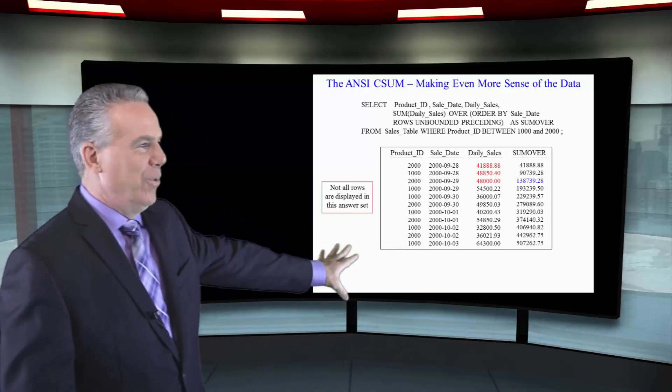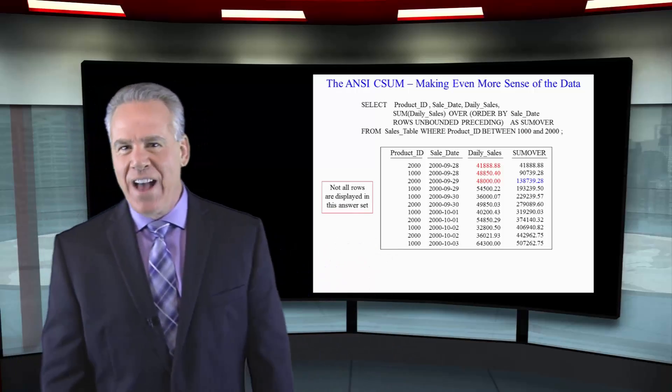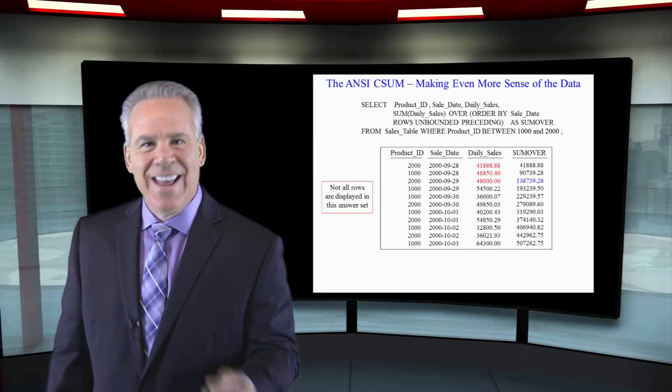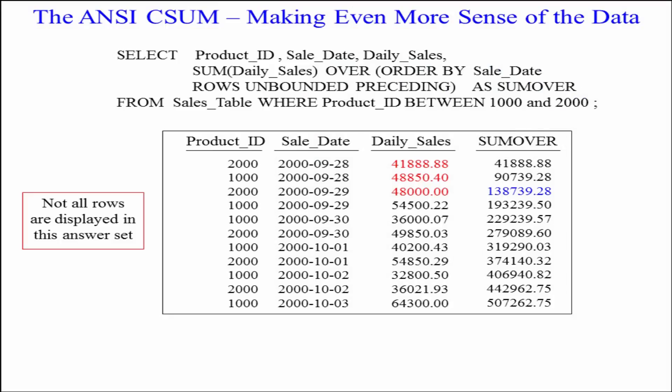Check out the blue in the answer set: 138,739. We're making some money now. How was it calculated? After the sort by sale date, the rows were calculated as 41,888, then 48,850, then 48,000 — and that totals 138,739.28. It continues to add row by row, but remember, only after it's been sorted.